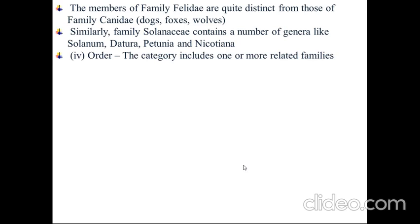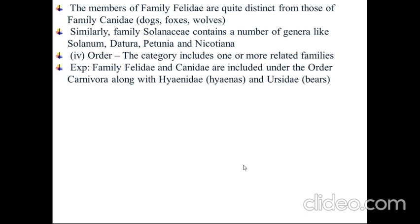Order — the category includes one or more related families. For example, family Felidae and Canidae are included under the order Carnivora, along with Hyaenidae the hyenas, and Ursidae the bears.